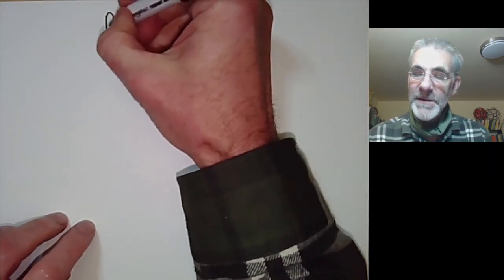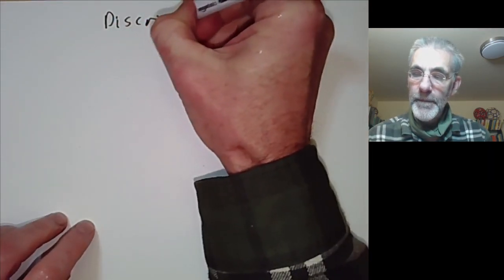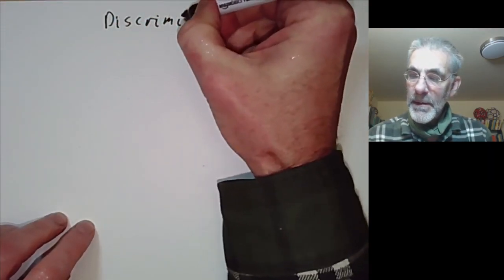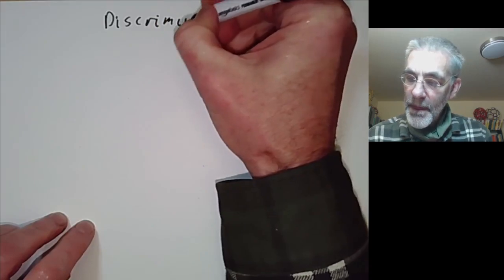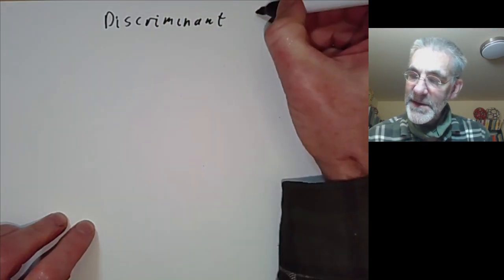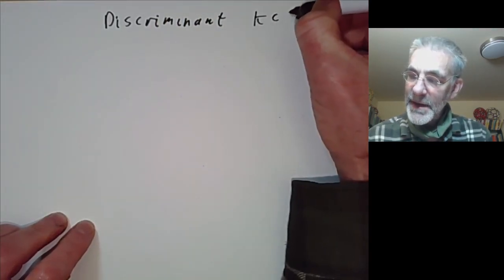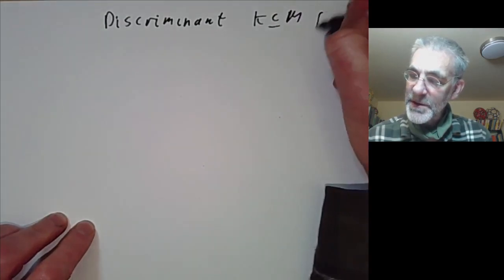This lecture is part of a Galois theory course and will be about the discriminant of a field extension k contains M, which we're going to assume is finite.